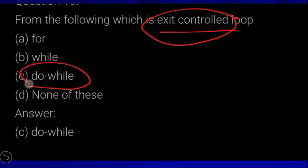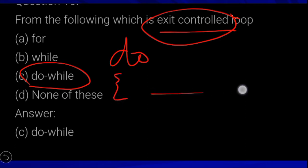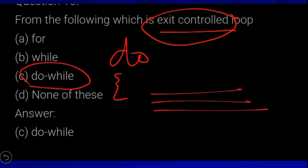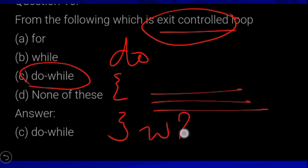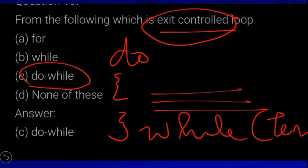For an exit control loop, the do-while loop is used. The syntax starts with 'do', then the body of the loop inside curly braces, followed by the while condition and test expression at the end.